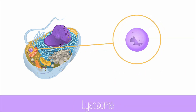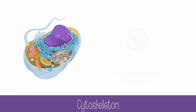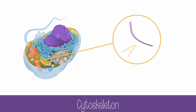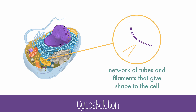Lysosomes are vesicles that are made from the Golgi apparatus that contain digestive enzymes. These enzymes will help break down unwanted substances. The cytoskeleton is a network of tubes and filaments that give shape and structure to the cell, just like your bones give your body shape and structure.